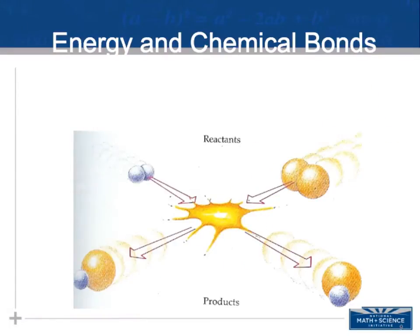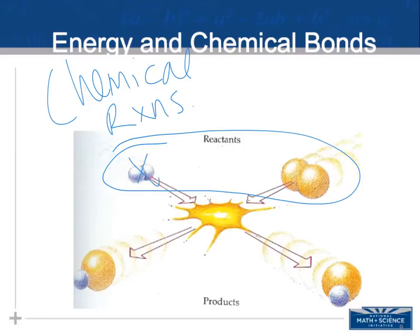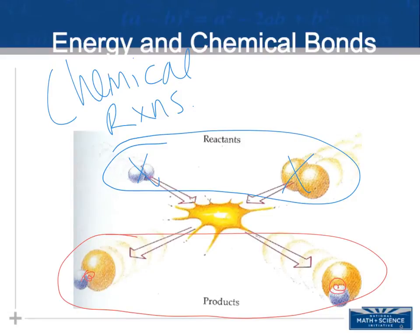Chemical reactions are the breaking of bonds and the forming of new ones. In the picture, these are my reactants — bonds are broken here, and with my products, new bonds are formed. That's all a chemical reaction is. During that reaction, energy could be captured and stored in bonds, or it could be released from bonds.